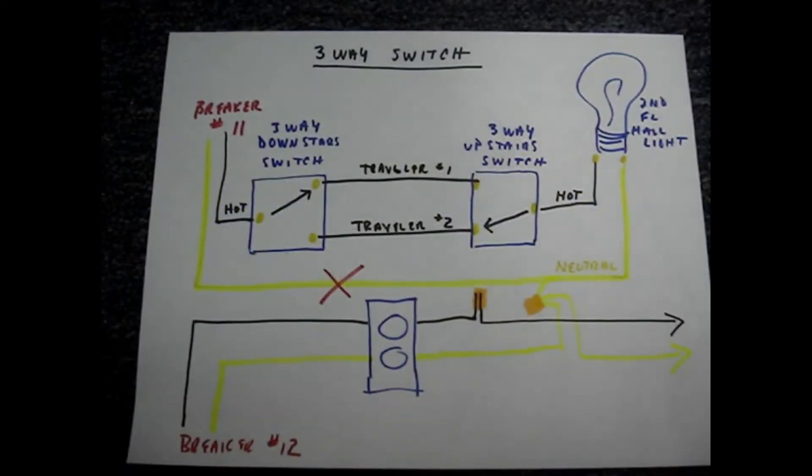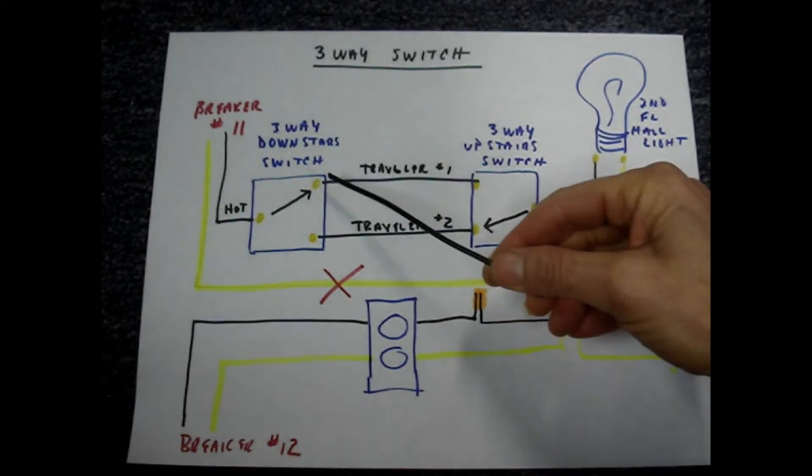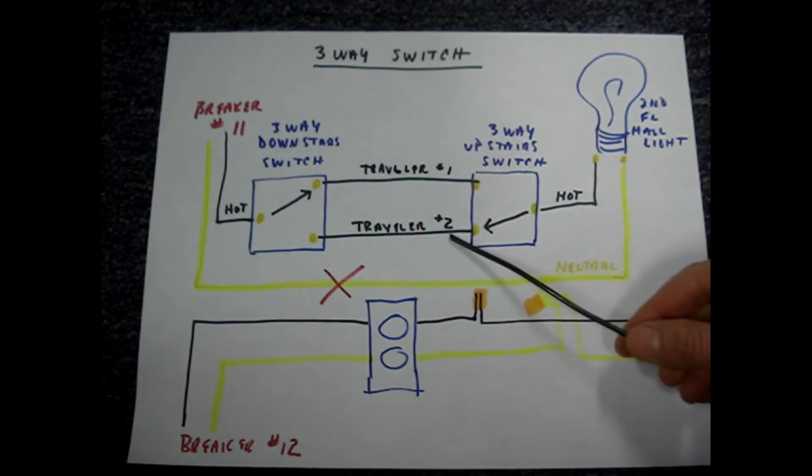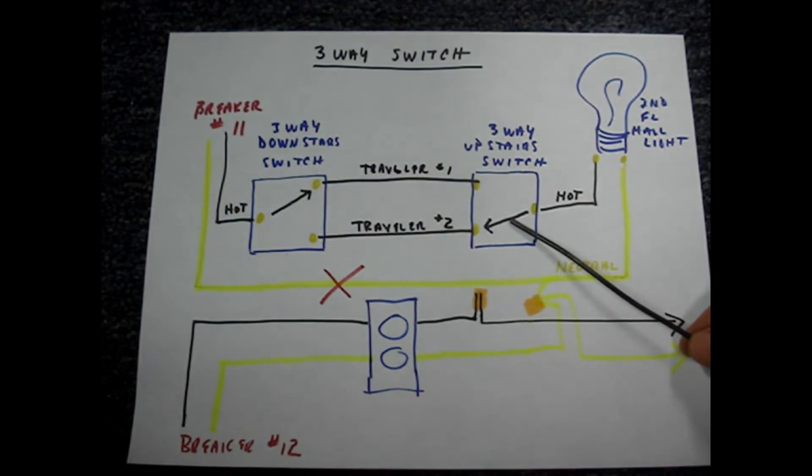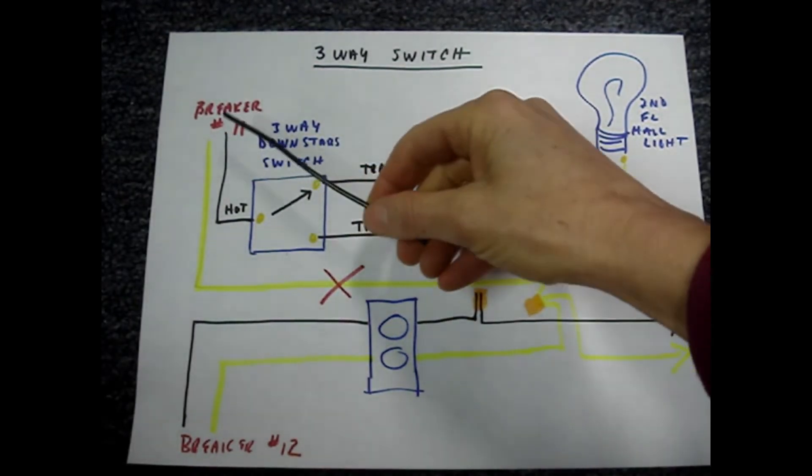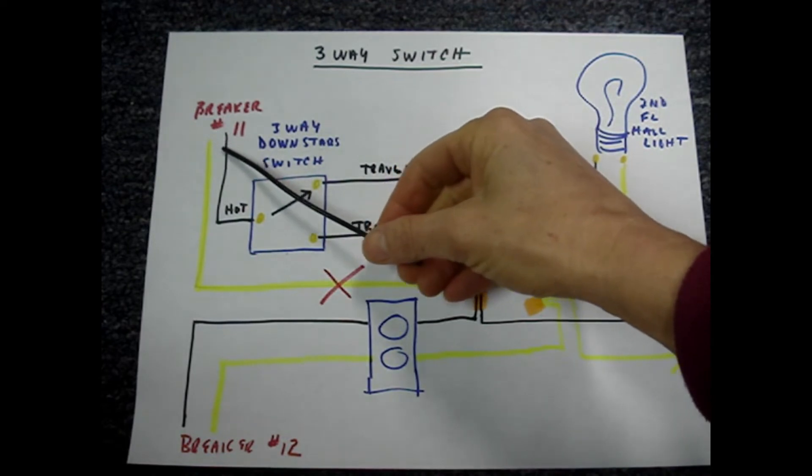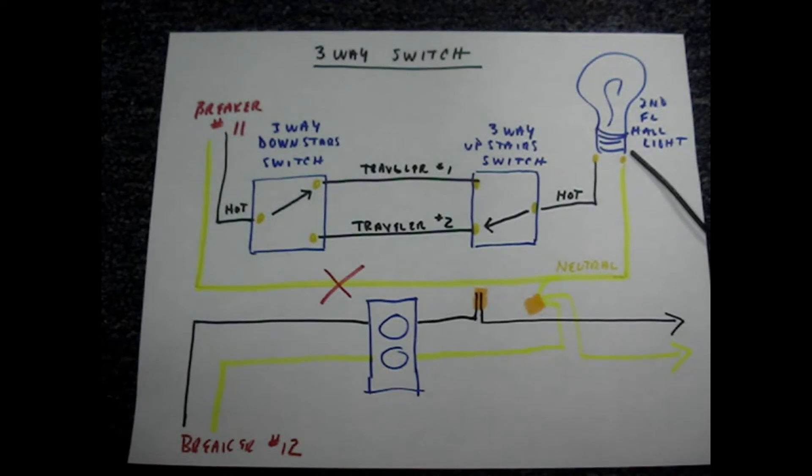In my situation, only one cable was run with two wires, a wire for each of the travelers between the downstairs switch and the upstairs switch. An extra cable wasn't run to connect the neutral from the breaker 11 circuit to the second floor hallway light.